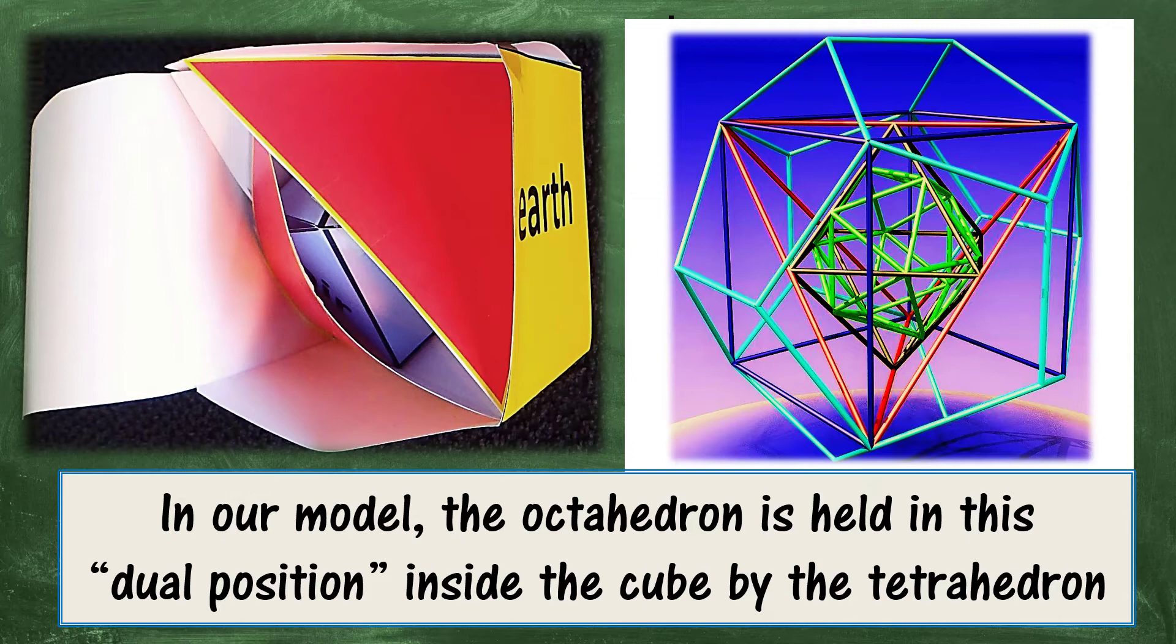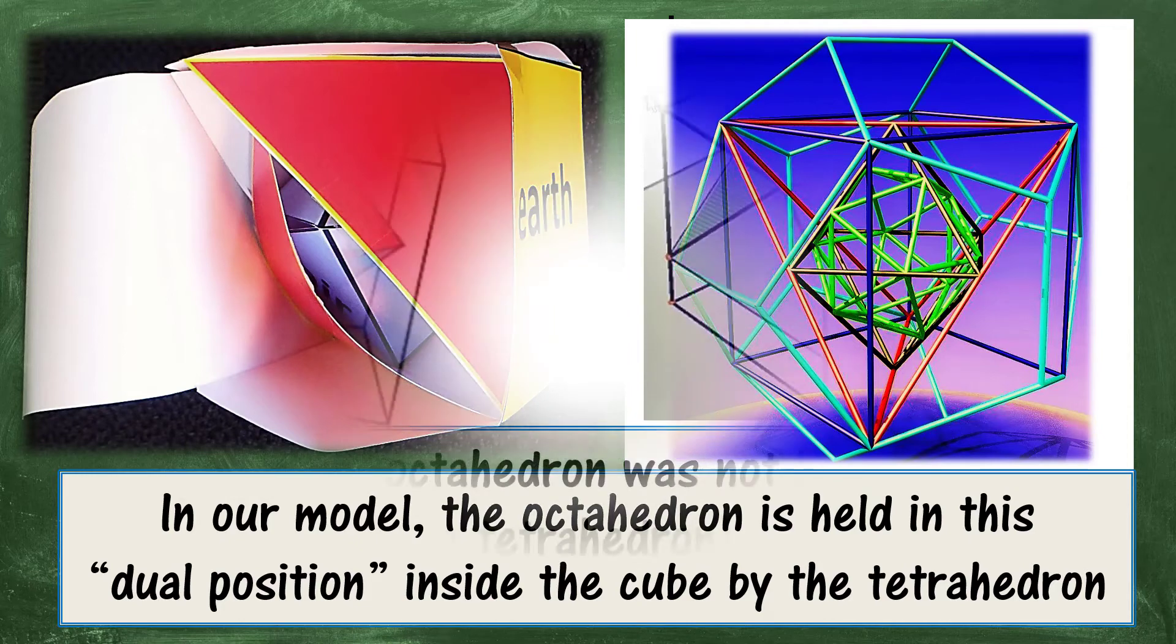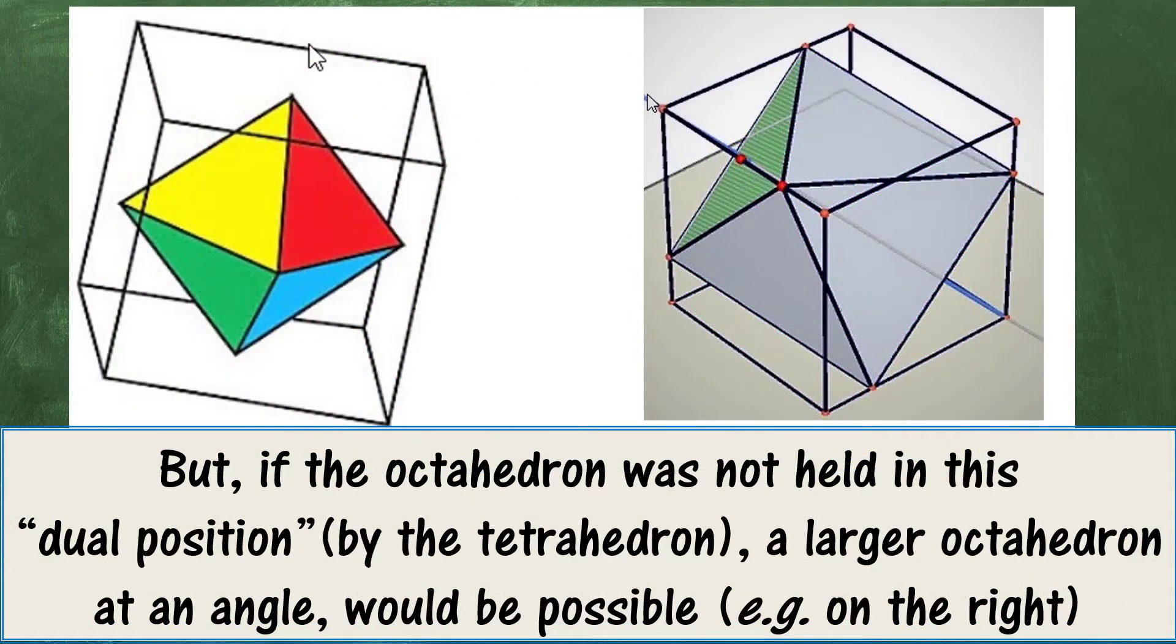And the same on the right. But, if the octahedron was not held in that dual position, a larger octahedron, at an angle, would fit inside the cube.